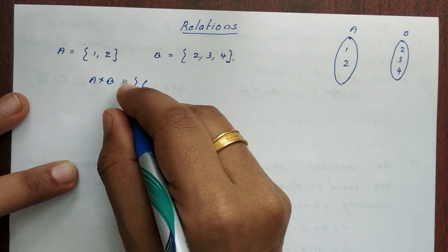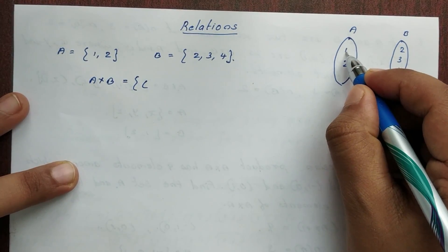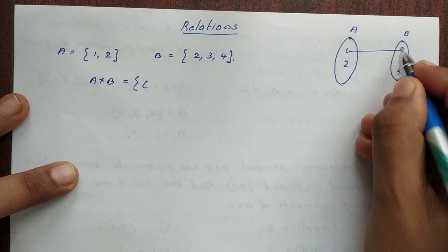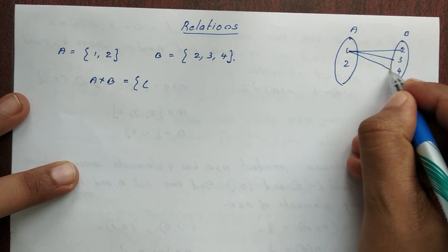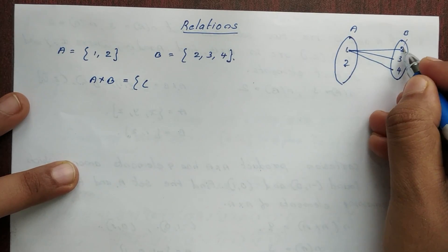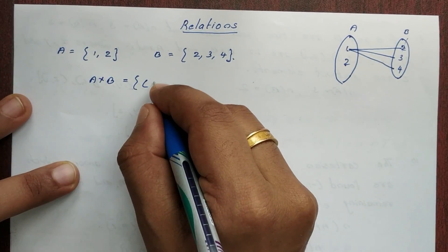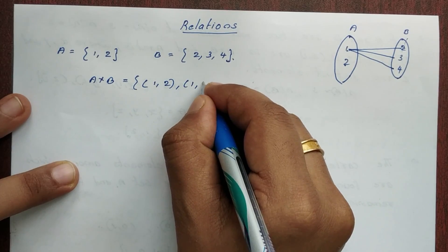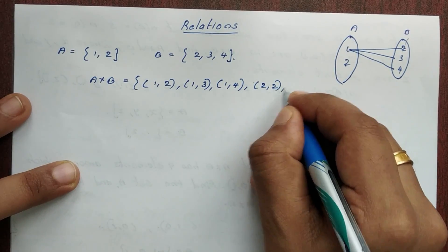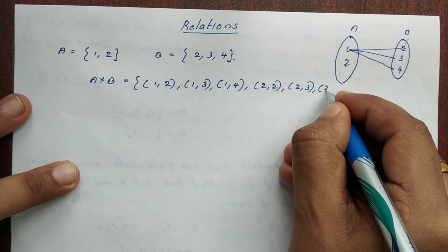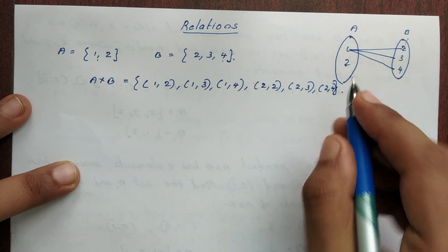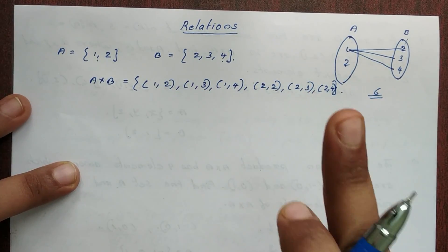A cross B is equal to — Set A has 2 elements, Set B has 3 elements. So A cross B gives ordered pairs: (1,2), (1,3), (1,4), (2,2), (2,3), (2,4). That means a total of 6 ordered pairs. This is A cross B.